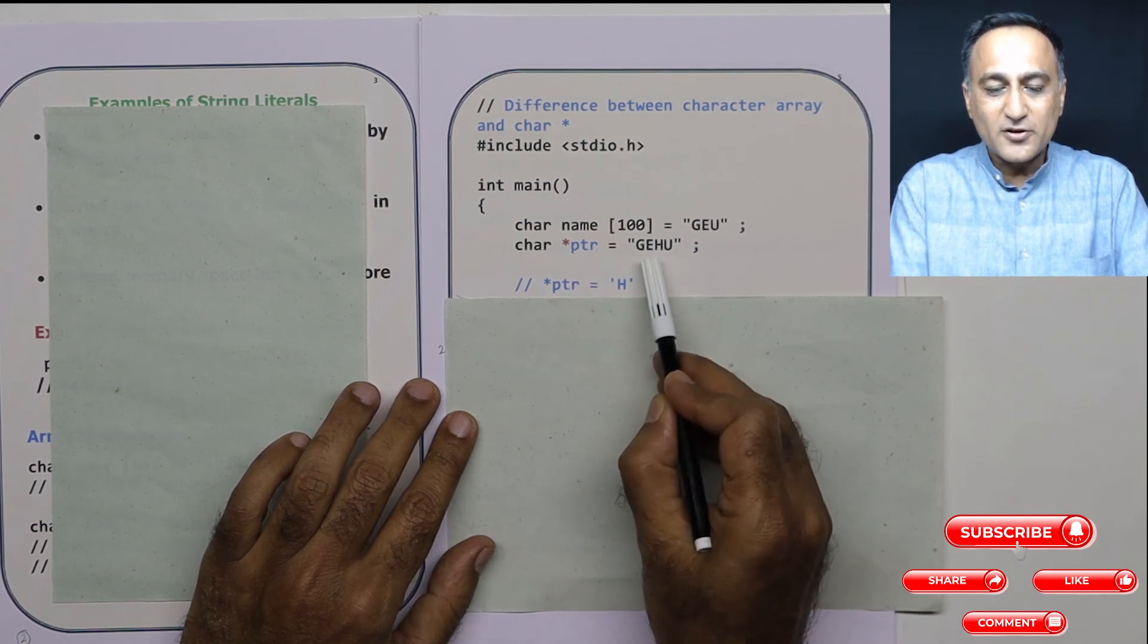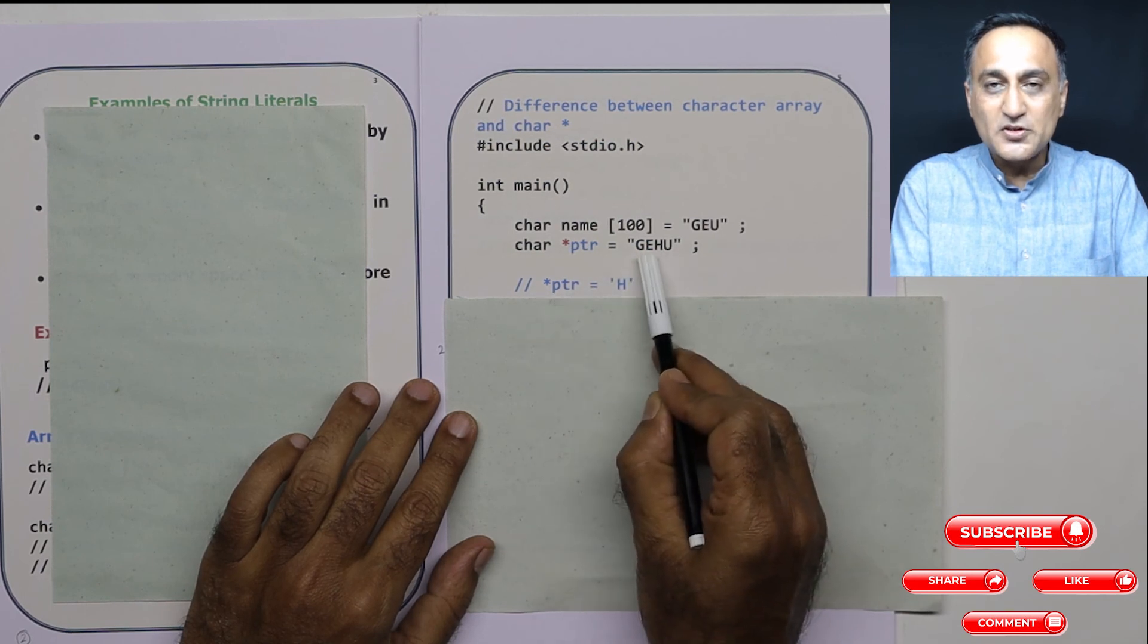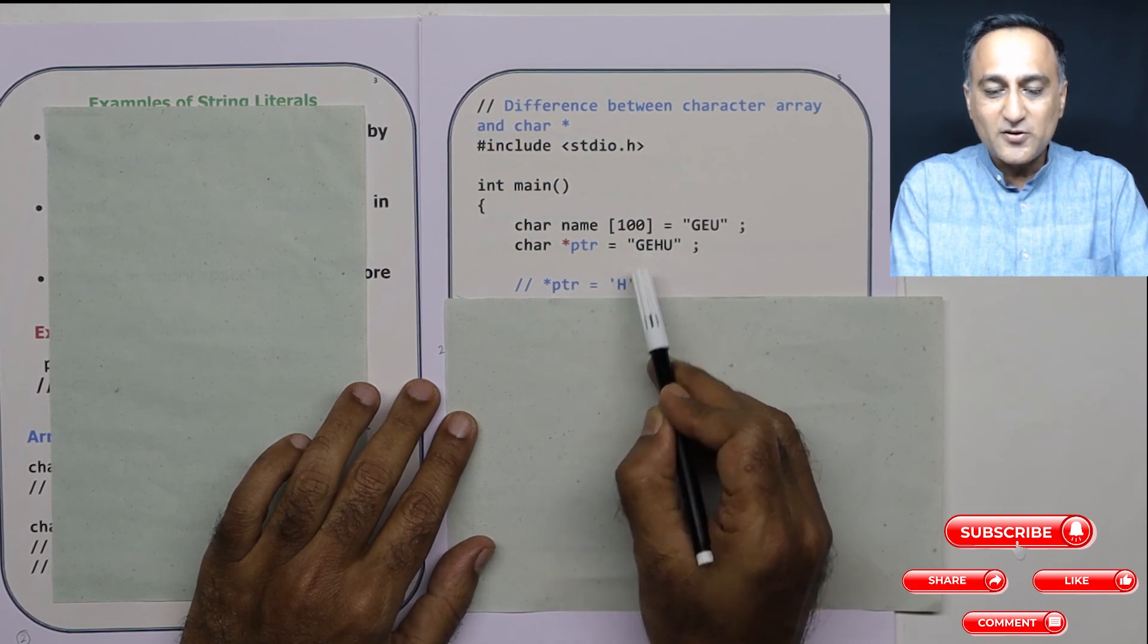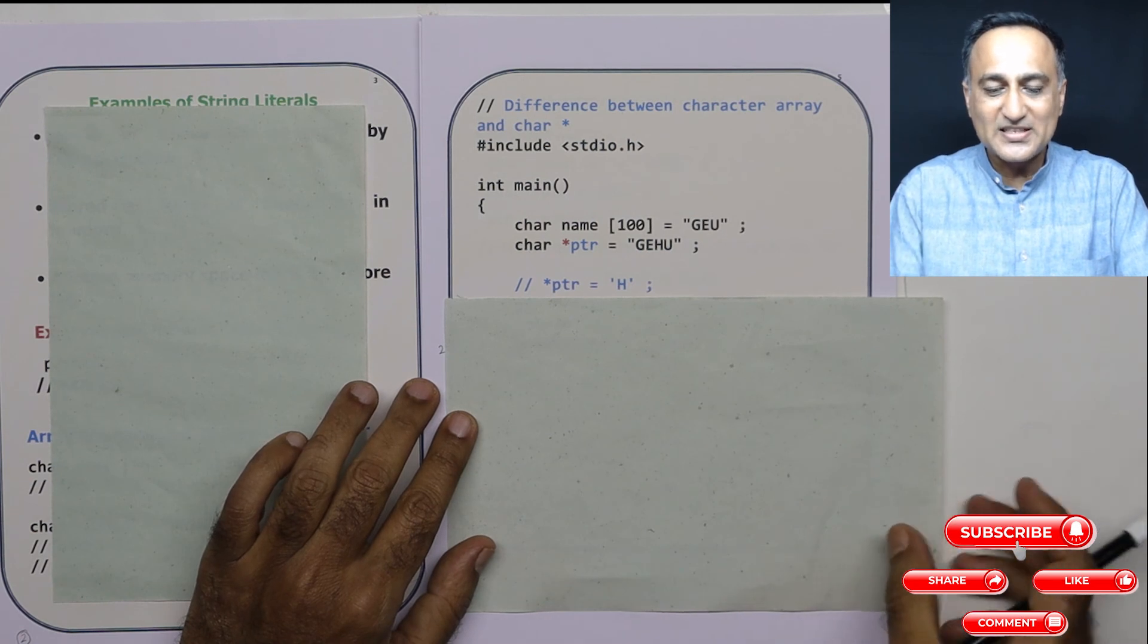Ptr refers to address of g. Star ptr refers to g. So you are trying to change g to h. It doesn't like that, it starts shouting at you.